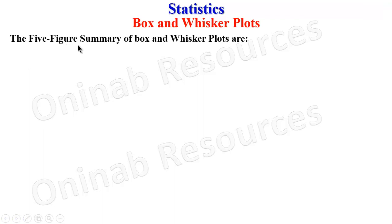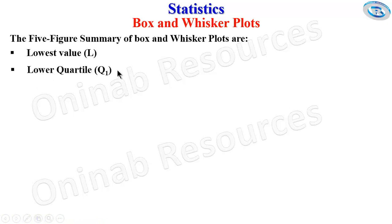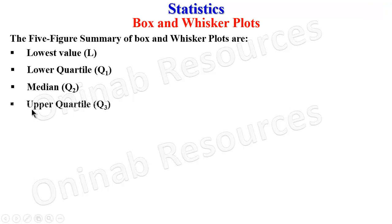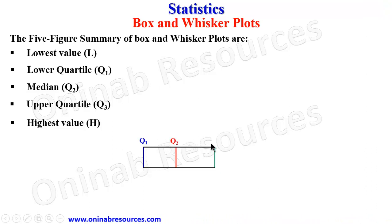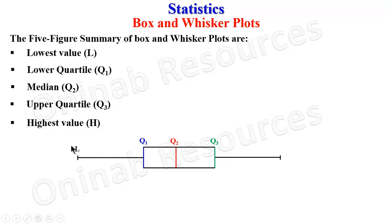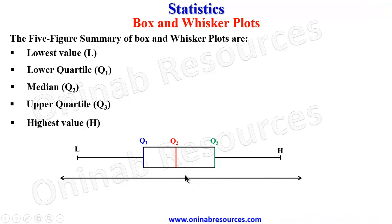The five-figure summary of box and whisker plots are: first, the lowest value of the data set, the lower quartile of the data set, the median, the upper quartile, and the highest value. The diagram below represents the lower quartile, the median, and the upper quartile. The lowest and highest values form the whiskers, represented along a number line.